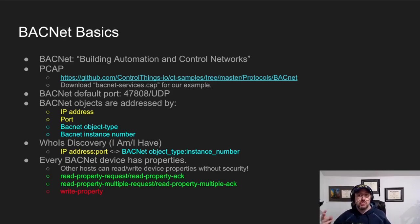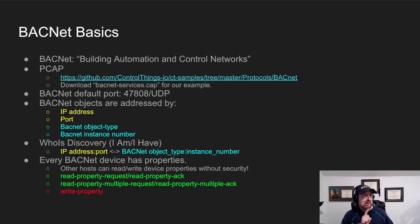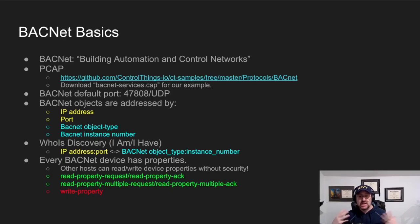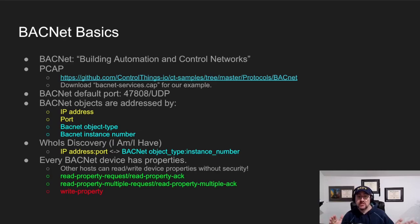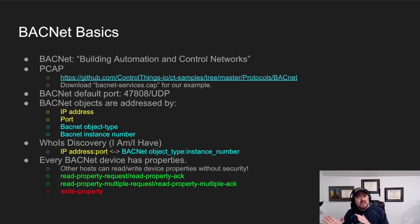Once you're on a BACnet network, there are two pieces of information you need to know to get to a BACnet object. One is the object type — it can be device, analog input, binary input, binary output, analog output, and so forth. These are different enums of the BACnet object type. The last piece of information is the instance number. So you can address an object by the object type and instance number — for example, device 104, or binary output 608.